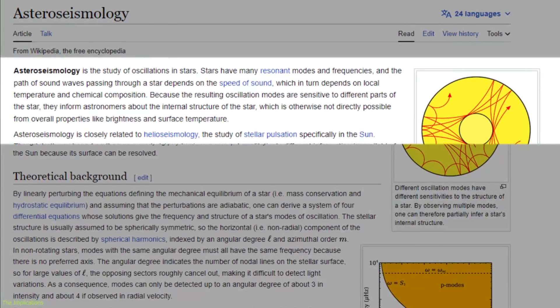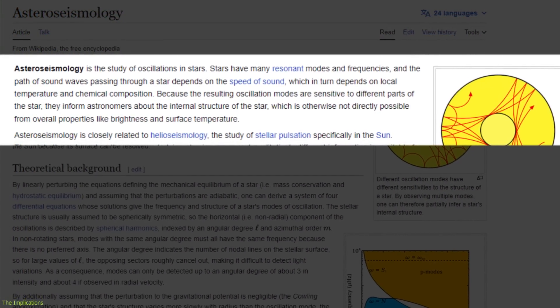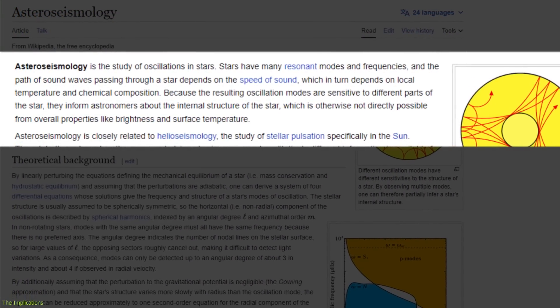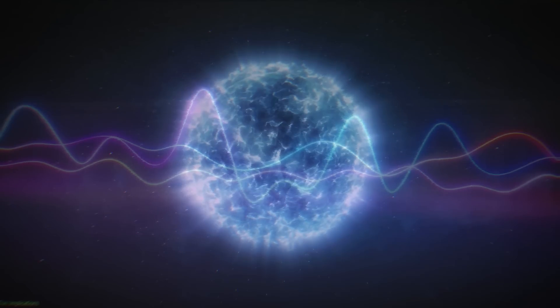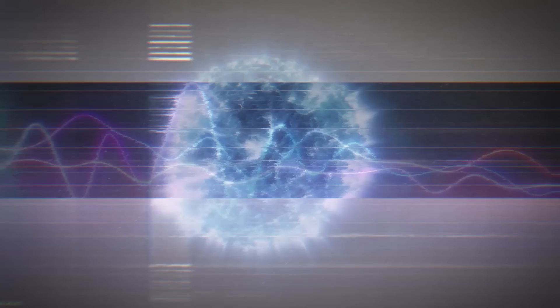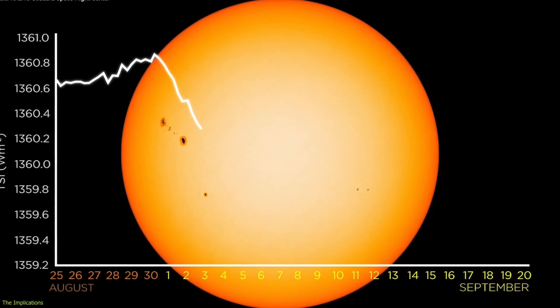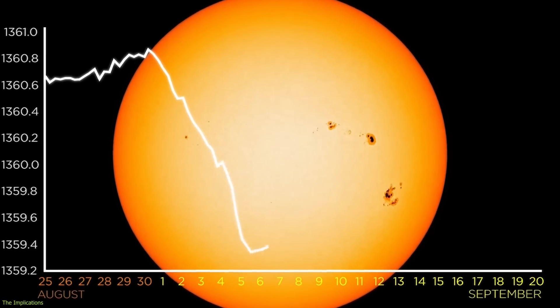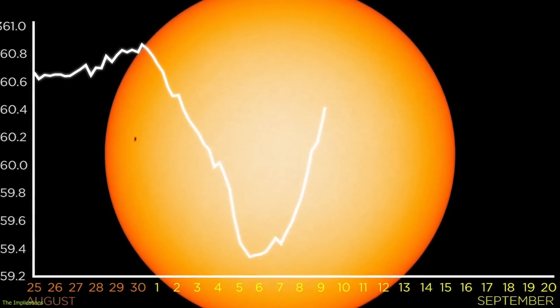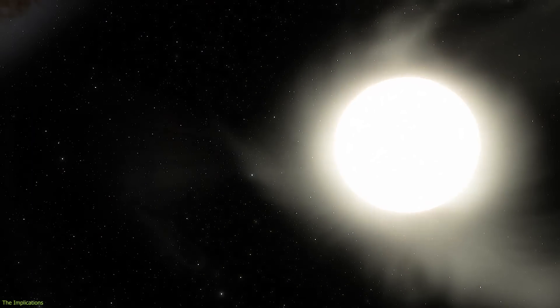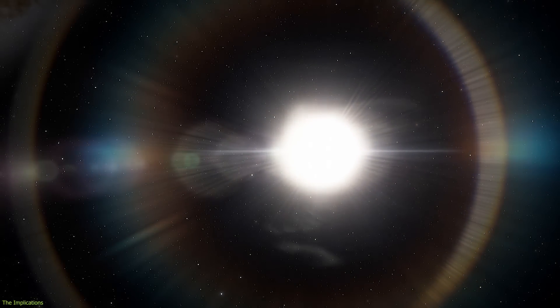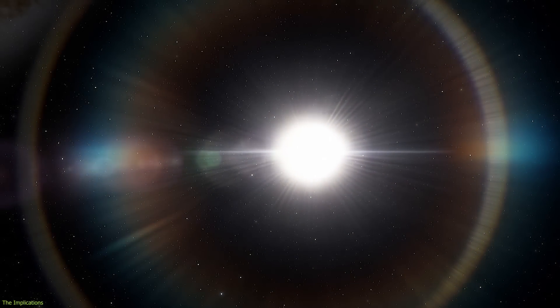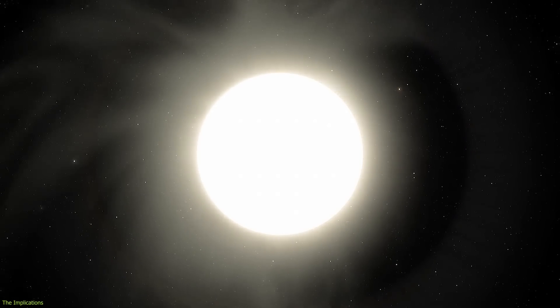Another way is to use asteroseismology, which is the study of stellar pulsations using sound waves. Sound waves can travel inside stars and probe their internal structure and dynamics. By measuring how these sound waves change as they pass through different layers of the star, we can infer what's going on inside them. Asteroseismology can also help us determine the mass, radius, temperature, age, rotation, magnetic field, and composition of stars with high accuracy.